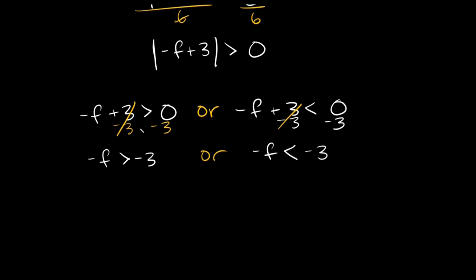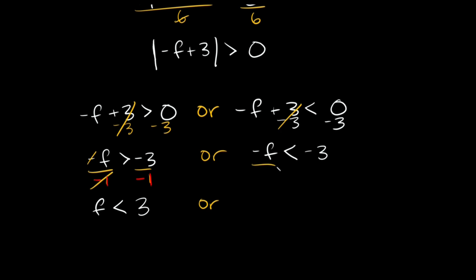Now get rid of the negative sign on f by dividing both sides by negative 1. Remember: whenever you multiply or divide by a negative number, you always flip the sign. So the first becomes f is less than positive 3, and the second becomes f is greater than positive 3. These are our two inequalities connected by 'or'.